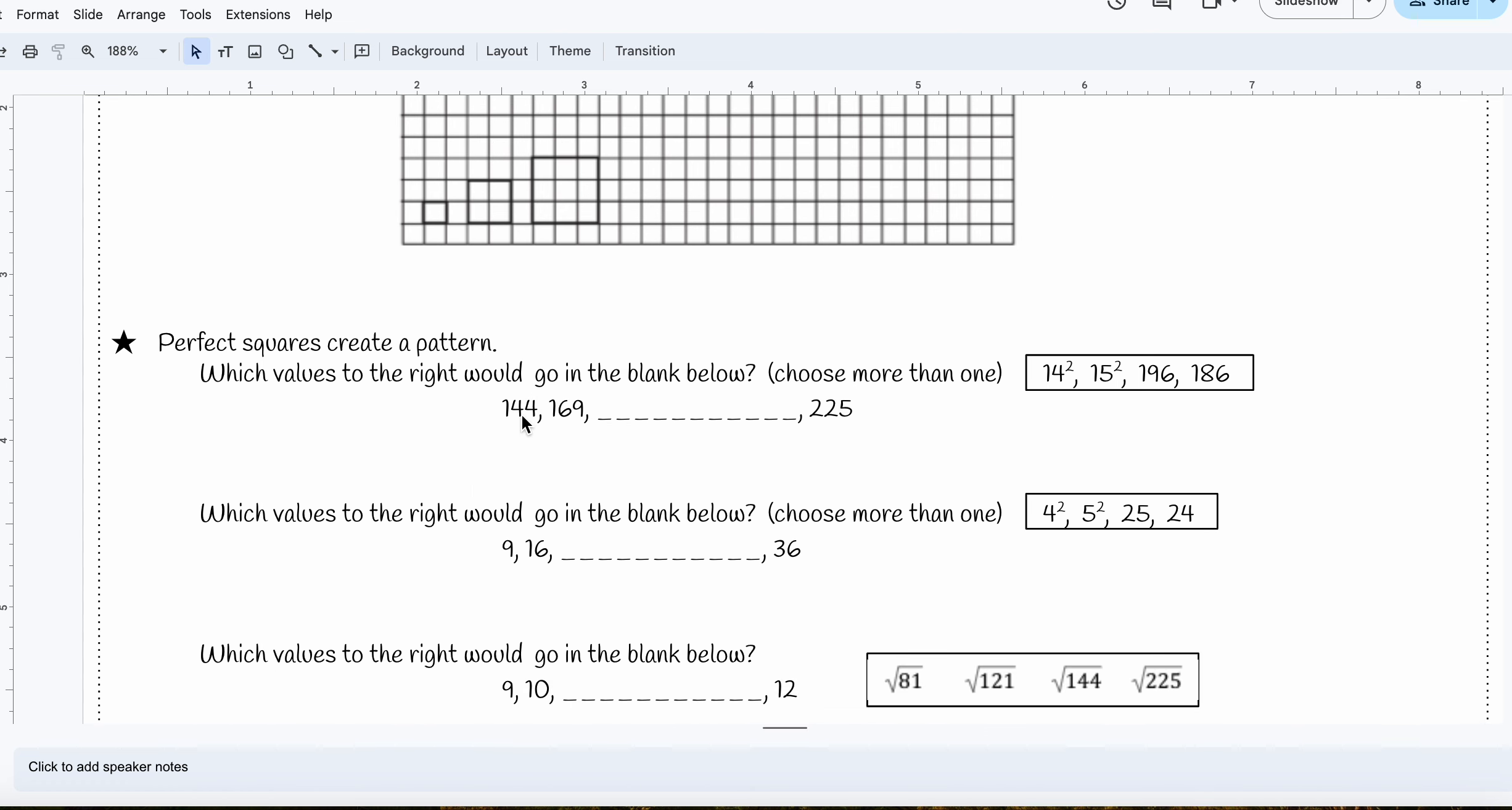I know that 144 is 12 squared or 12 times 12. I know 169 is 13 times 13. So I'm looking for something that would give me 14 times 14, because I know 225 is 15 times 15. So I look at my choices, 14 squared, and 14 times 14 or 14 squared is 196. So I would circle those two choices.